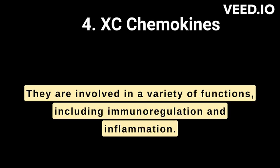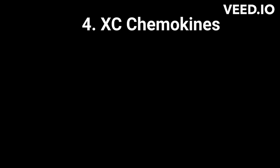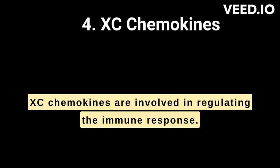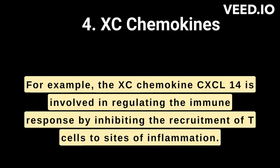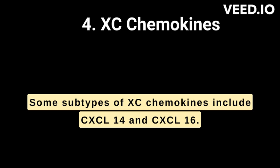XC chemokines. They are involved in a variety of functions, including immunoregulation and inflammation. XC chemokines are involved in regulating the immune response. For example, the XC chemokine XCL14 is involved in regulating the immune response by inhibiting the recruitment of T cells to sites of inflammation. Some subtypes of XC chemokines include XCL14 and XCL16.